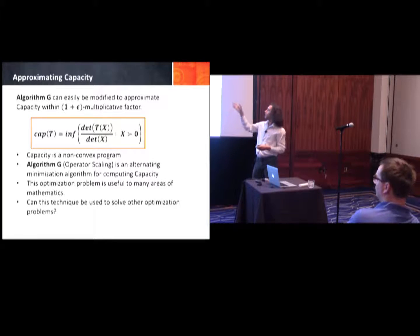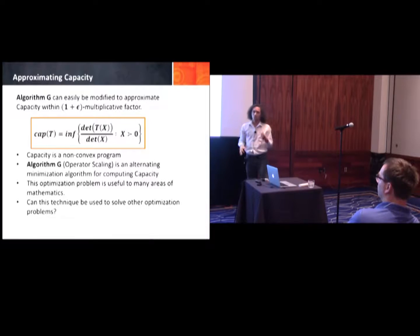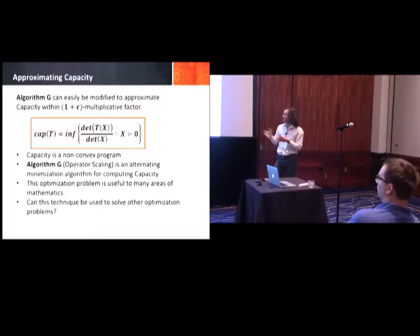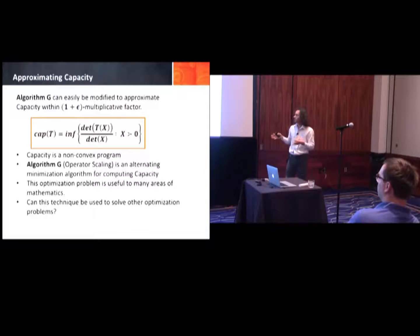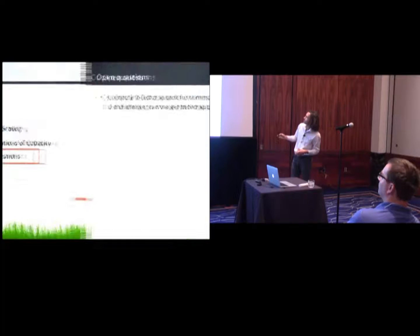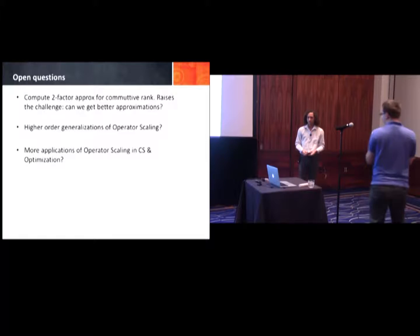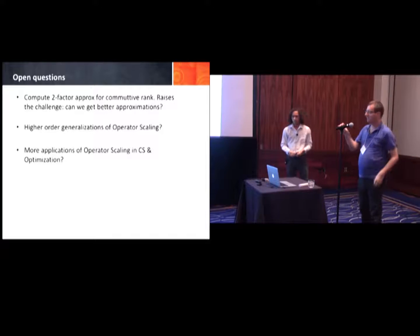Gurwitz's algorithm can be adapted to approximate the capacity within a (1 + ε) multiplicative factor. The capacity is a non-convex optimization program, and algorithm G is an alternating minimization algorithm for computing it. Due to all of these connections, this optimization problem is useful across many areas of mathematics. The open questions include: do we have more applications of operator scaling in CS and optimization? Thank you.